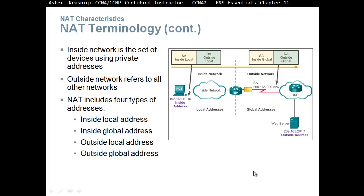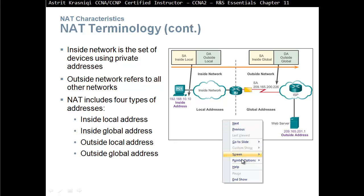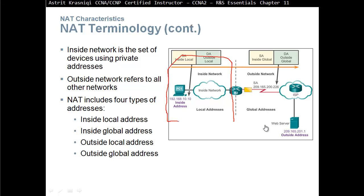So inside local address is the addresses within our network — everything here is our inside local address. The address that we translate to — for example, say that we translate to this interface — is called inside global address. The address that we are going to — say that we are going to this web server — that's going to be the outside local address. And the web server's router address is the outside global address, which is usually the same as the outside local address.